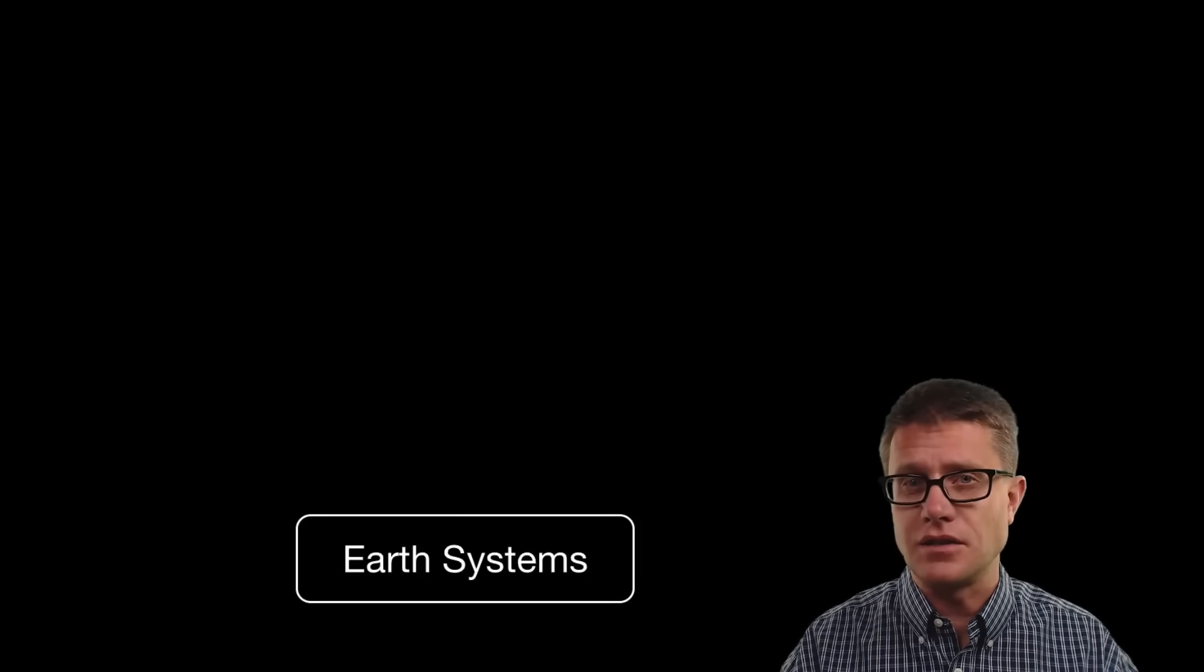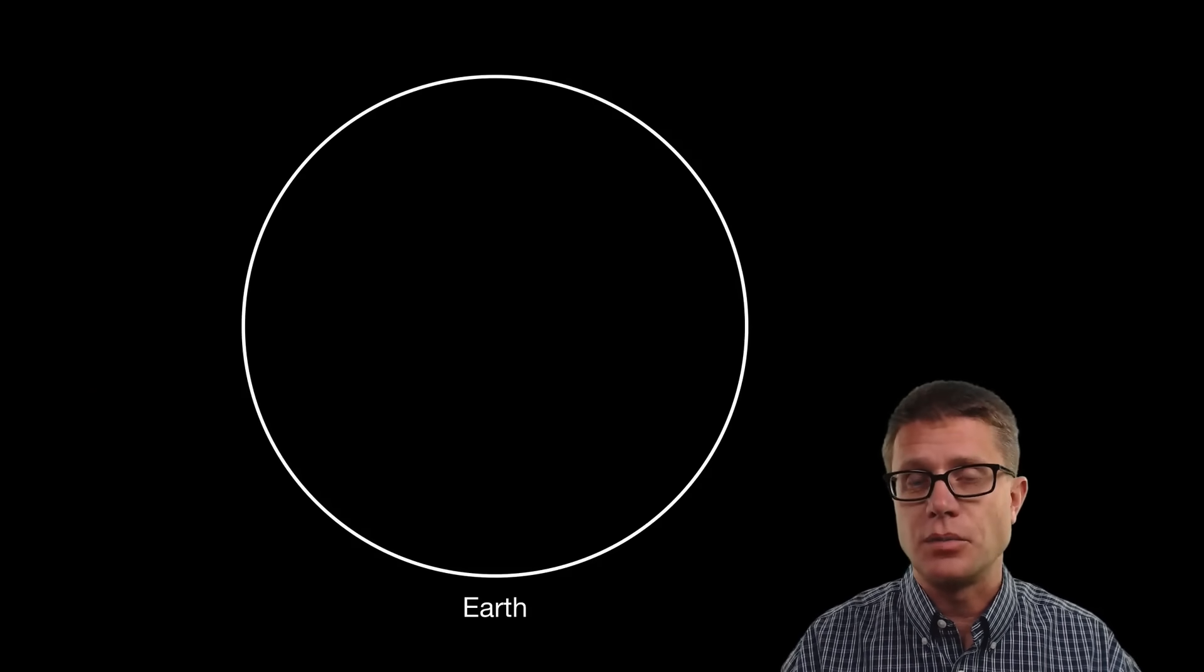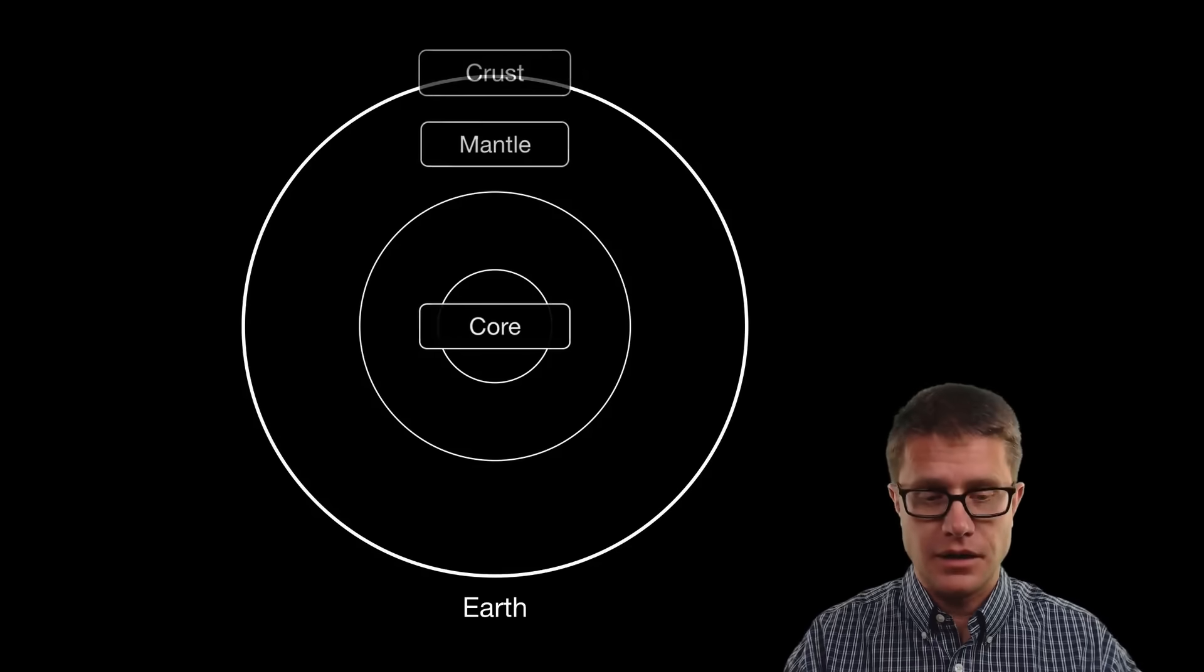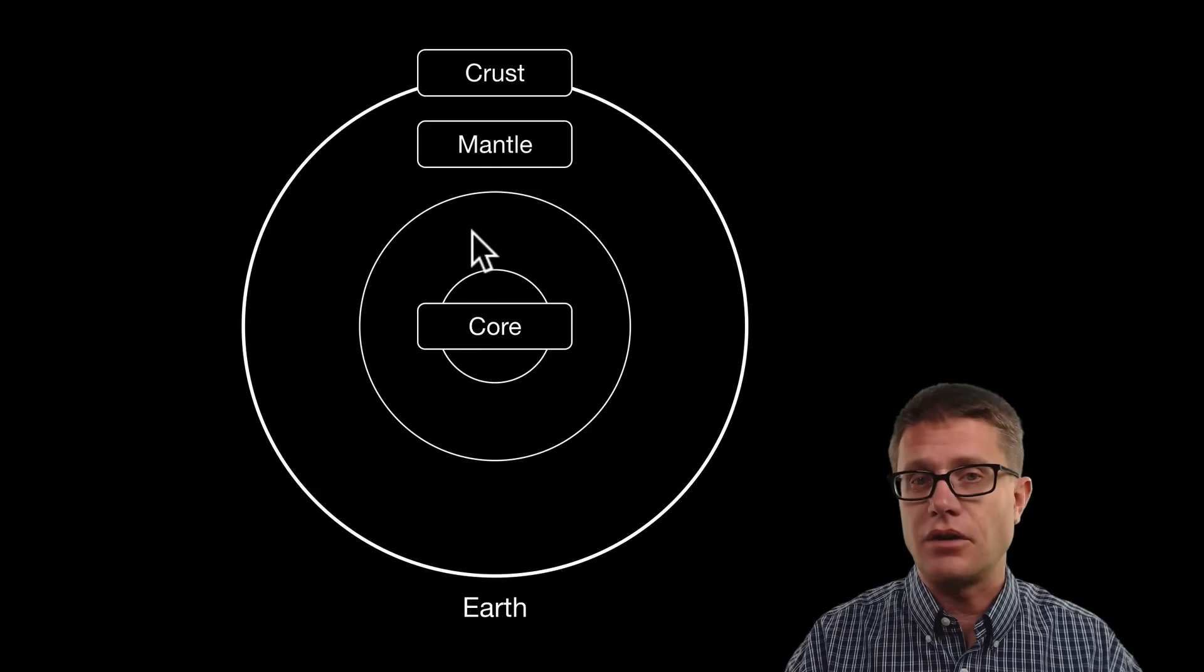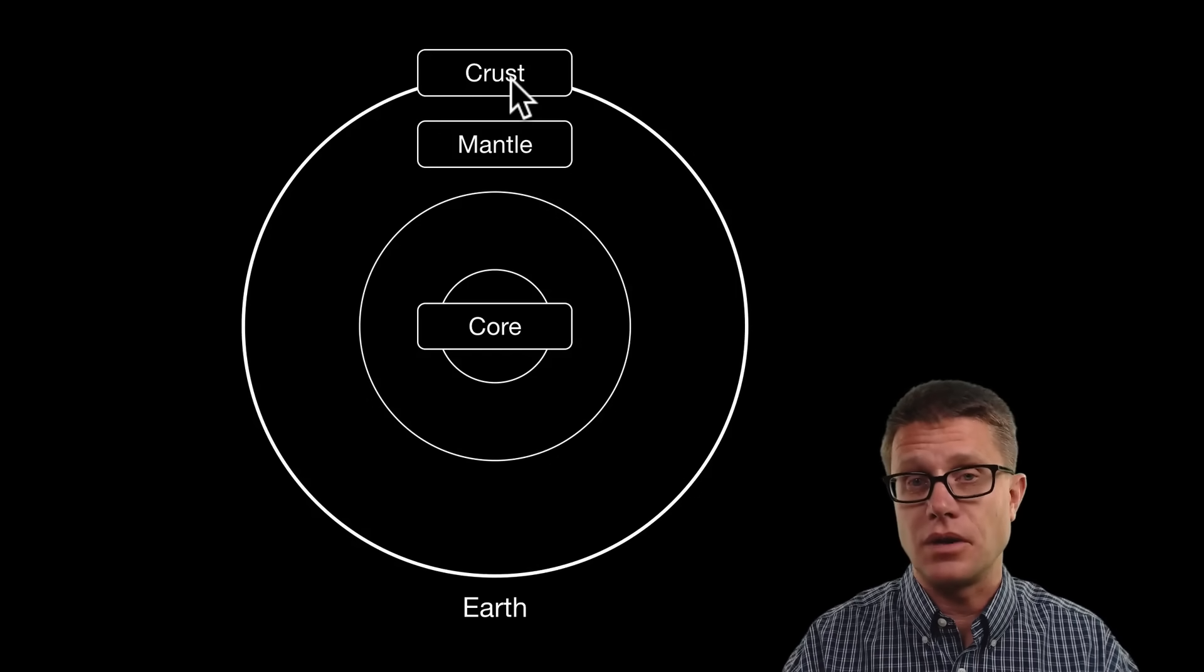And to understand these systems on the earth we should really understand how the earth is put together. And so if we look at the layers, on the inside we have the inner and outer core. We then have the mantle and finally we have the crust.